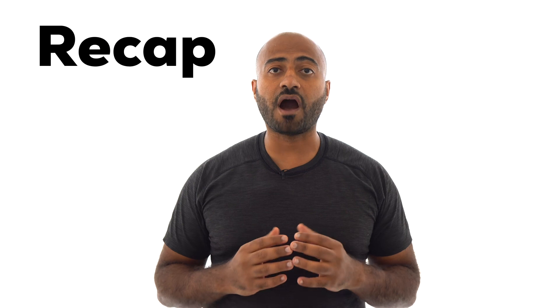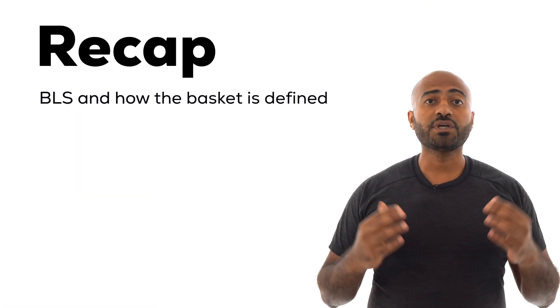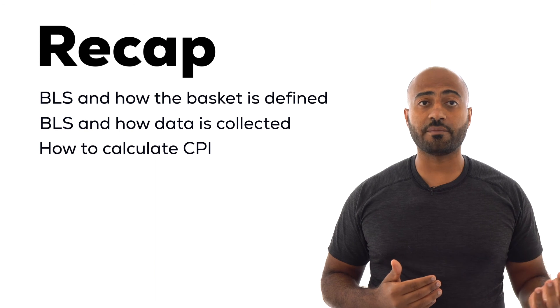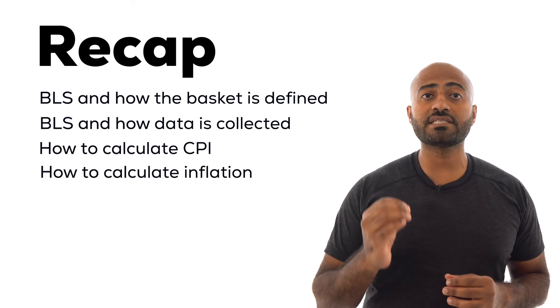Obviously our example made this seem very easy by simplifying the basket from 8,000 goods to 3, but now you have an idea of how CPI and inflation are calculated. In future lessons we will discuss how to use CPI and inflation in your everyday life, and also talk about some limitations of CPI as a measure of cost of living. As a recap, we talked about the BLS, how they define the basket of goods and services, how they collect data on prices, and did a mathematical example of how to calculate CPI and inflation rates. Make sure to practice the problems provided — see you next class.